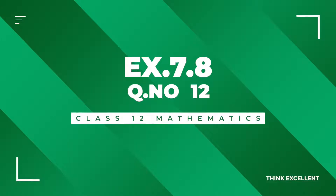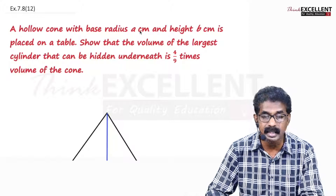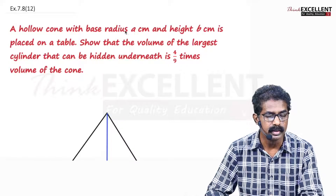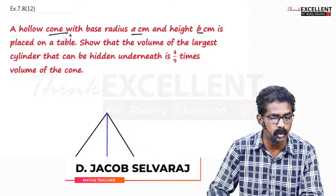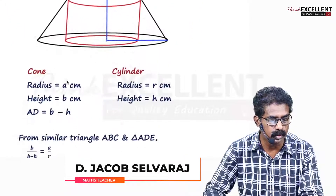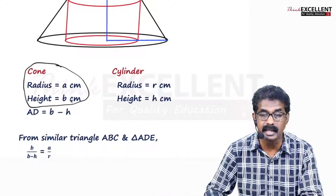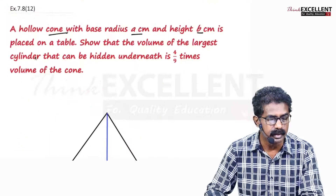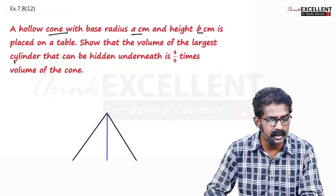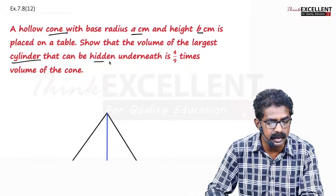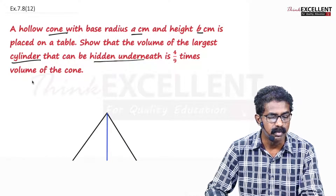Now let's move on to the next question. A hollow cone with base radius A centimeter and height B centimeter. Show that the volume of the largest cylinder that can be inscribed underneath is 4 by 9 times the volume of the cone.